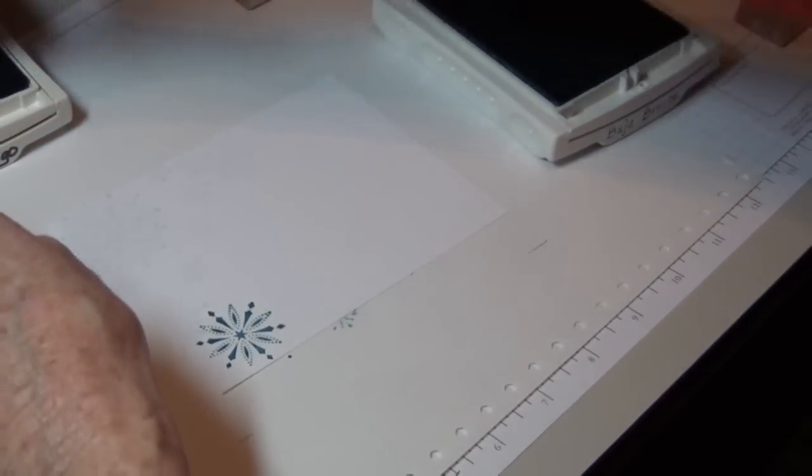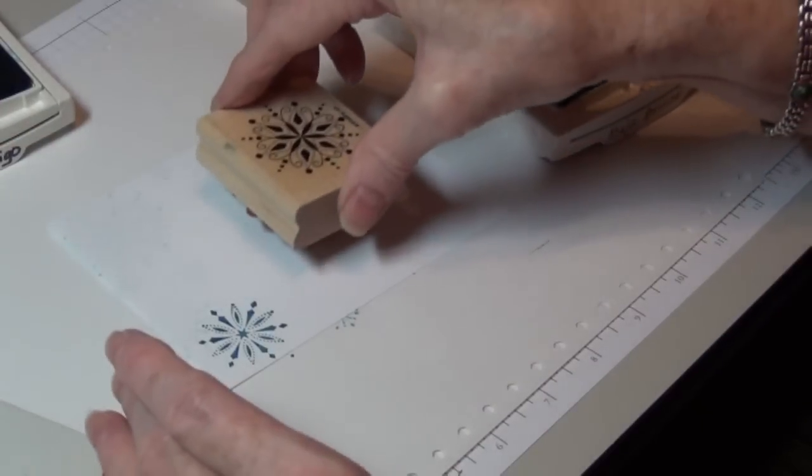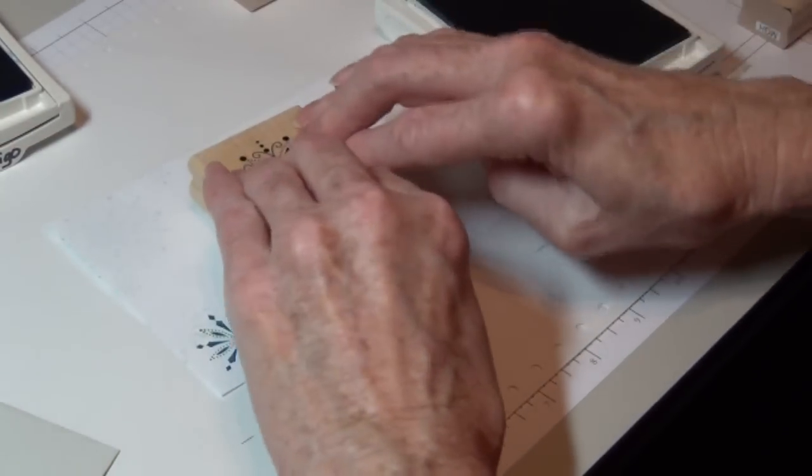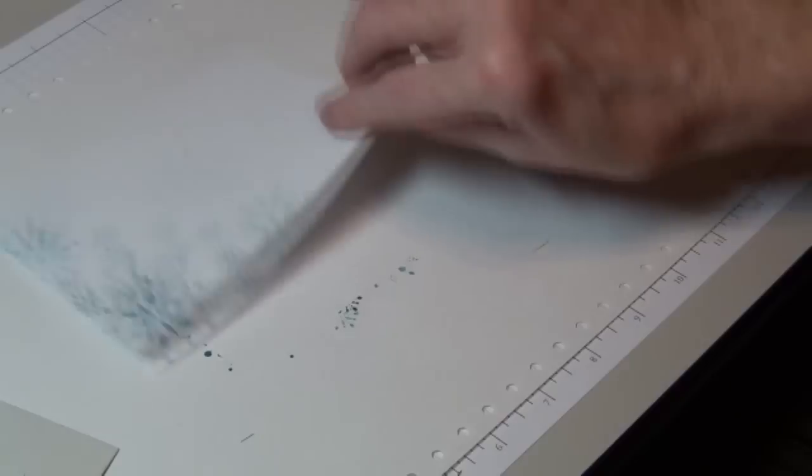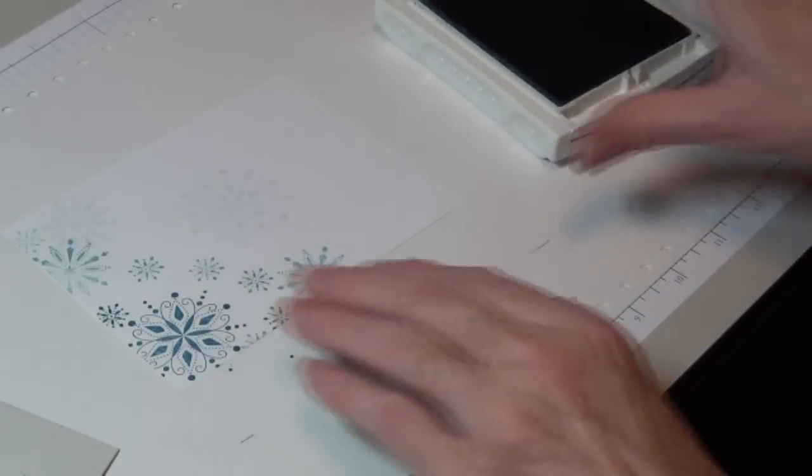I'm going to take the larger snowflake, put that in the center, right where our verse is going to go. And it's going to give a beautiful shadowed effect. Can you see that okay?